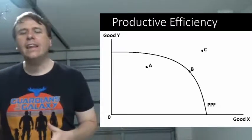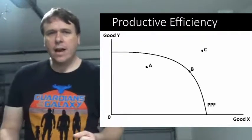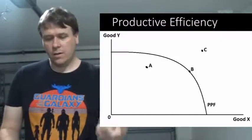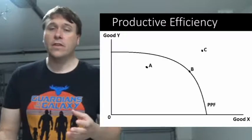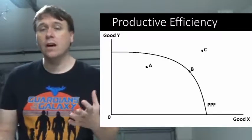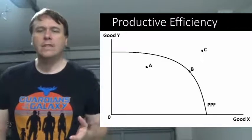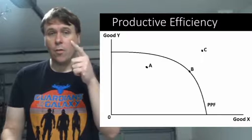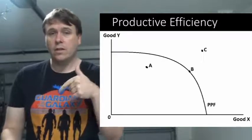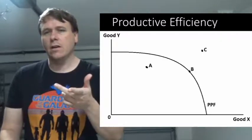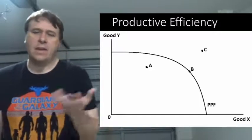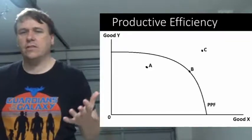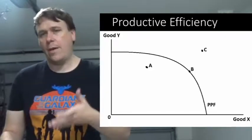This is fairly first year economics kind of thing and that's what we've got what we call production possibility frontier or production possibility curve depending on what textbooks you're reading. Basically that's a curve or a frontier that shows all the optimal combinations of outputs. So in the simple diagram you have two goods. It could be anything, could be bananas and pineapples. Basically you have your factors of production. You have your labor and you have your capital.